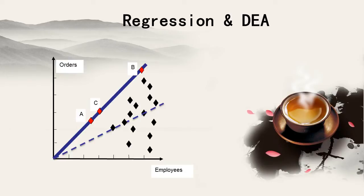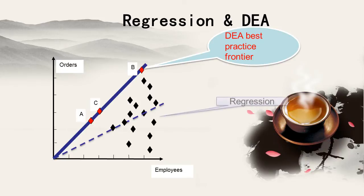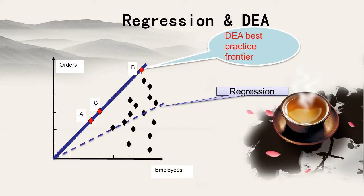Regression and DEA are two very different approaches. In this figure, the DEA best practice frontier is A, B, and C. If you use a linear regression, the regression line is fitted through the dataset.